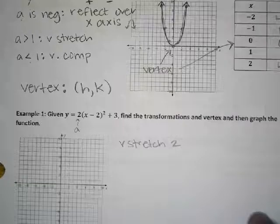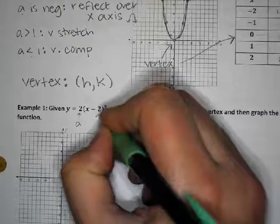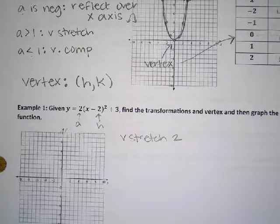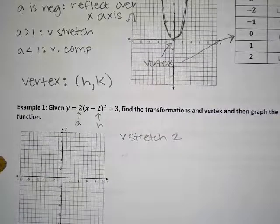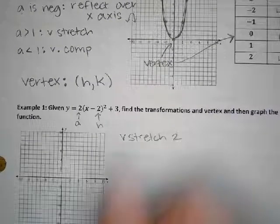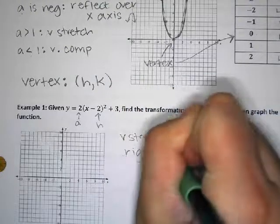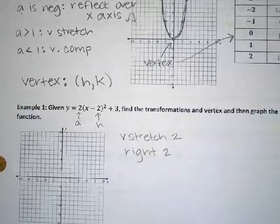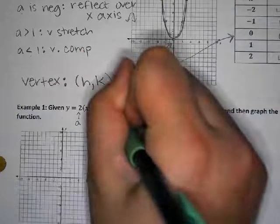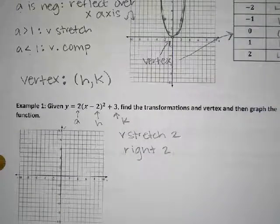The H value — it's a minus 2 inside, so which way has it moved? To the right — this graph has moved to the right 2. On the end we have the K value — it's a positive number, so it's moved up 3.